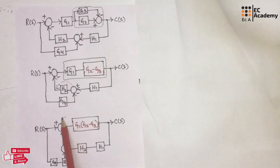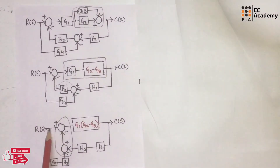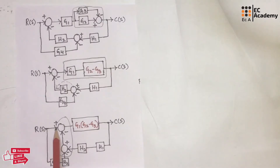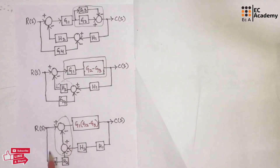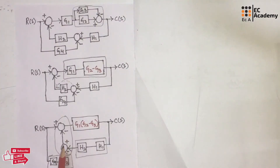Now this is very important. We need to combine these two summing blocks and make it a single summing block. This summing block has one input and this summing block has two inputs. If we combine them, we get a single summing block with three inputs: R(s), and the two feedback inputs. These two blocks are in series and these two blocks are in series, so let us simplify them while also combining the summing points.